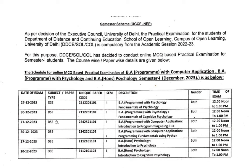The 30 December paper is for BA program with psychology: Fundamentals of Cognitive Psychology, timing 12 to 1. On 27 December, BA program with computer application has the paper Introduction to Programming using C++, timing 12 to 1, applicable for both students. So your practical exams are on 27 December and 30 December. These three courses have been discussed across two days, with timing between 12 and 1.